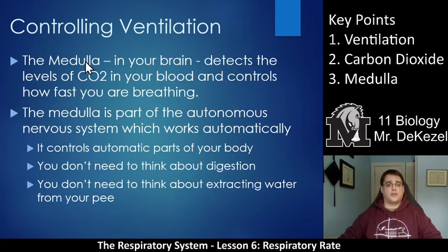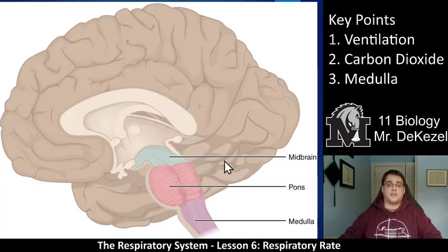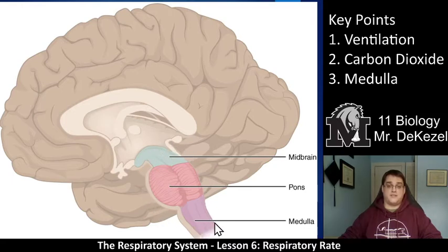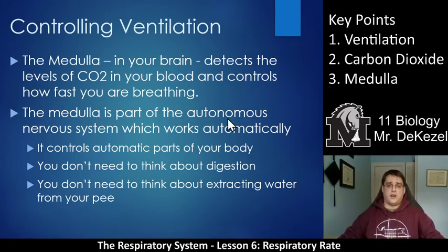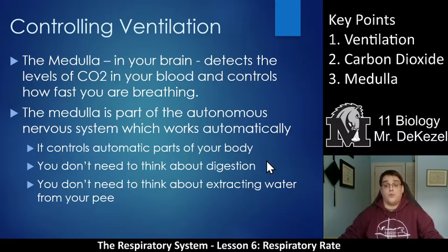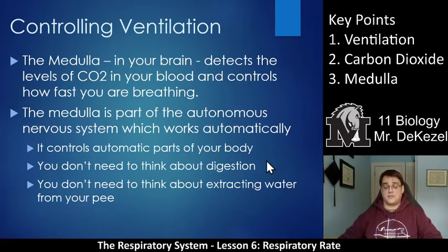The place that controls our breathing is the medulla, which is in our brain — right at the bottom of the brainstem. The brainstem controls the most basic processes of life: your heart beating, your breathing, your blood pressure. The medulla detects the level of CO2 in your blood and controls how fast you are breathing. The medulla is part of the autonomic nervous system, which works automatically. It controls the automatic parts of your body that you don't need to think about, such as digestion.